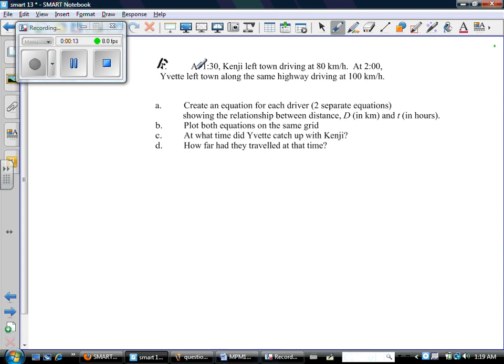So the question says, at 1:30, Kenji left town driving at 80 km per hour. At 2 o'clock, Yvette left town along the same highway at 100 km per hour. So two different people, two different start times, two different speeds. It says to create an equation for each driver showing the relationship between distance and time. Plot both equations on the same grid and then there's some questions we have to answer.